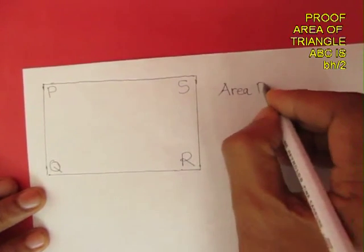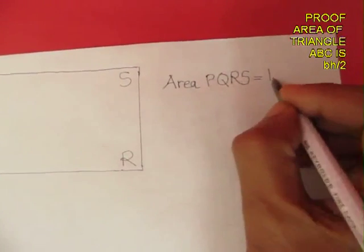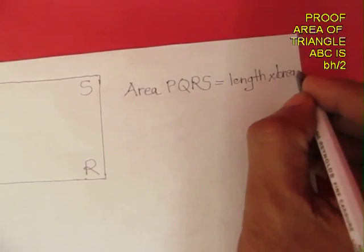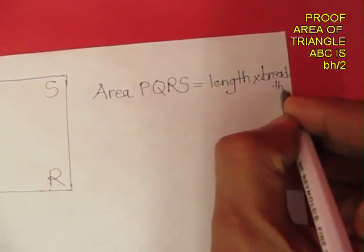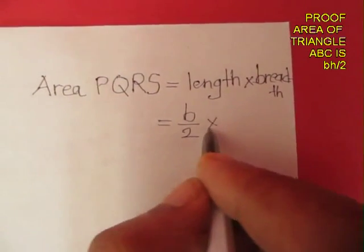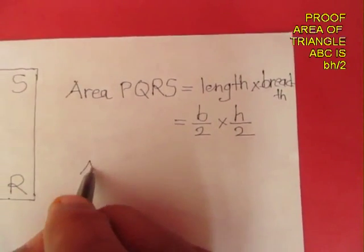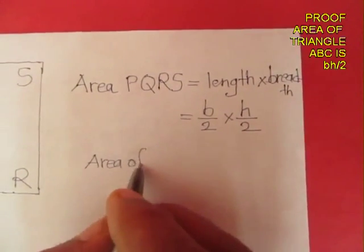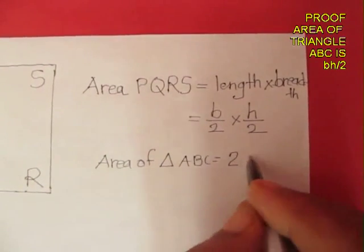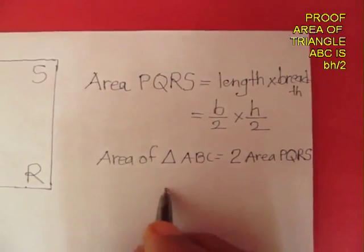Now the area of this rectangle PQRS would be its length into its breadth, which will be b by 2 into h by 2. And the area of the triangle ABC will be twice the area PQRS.